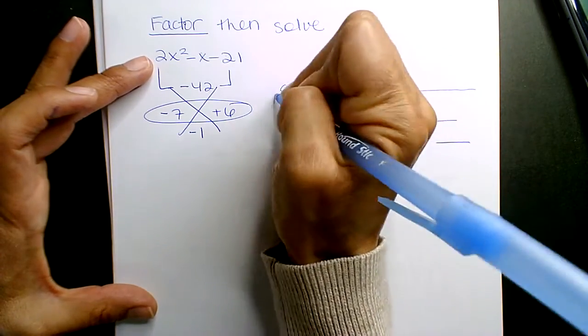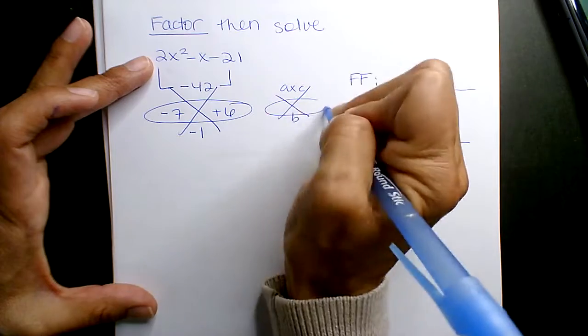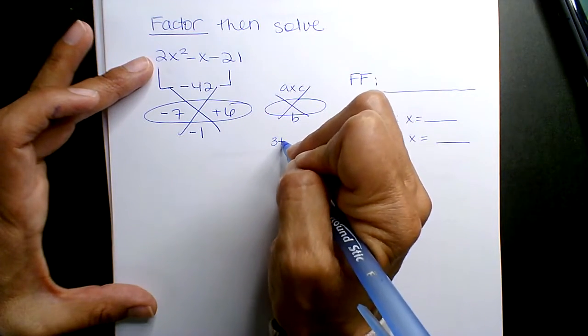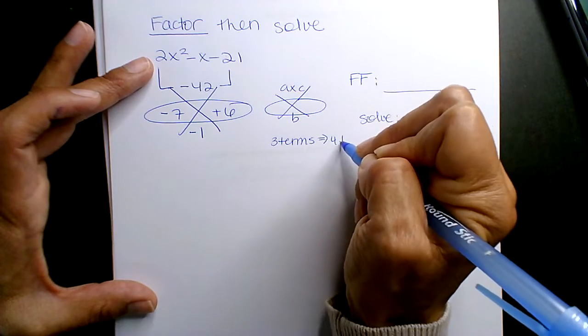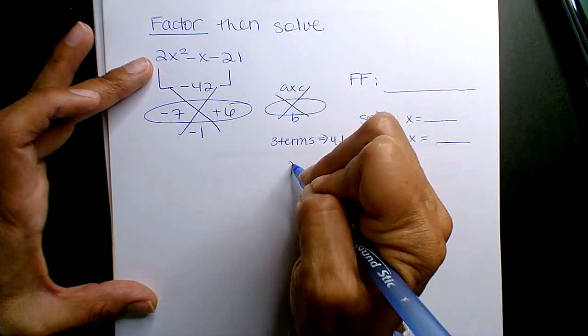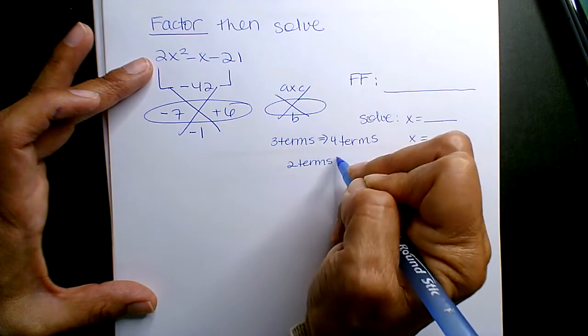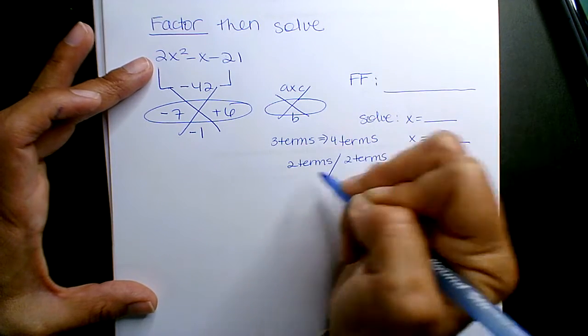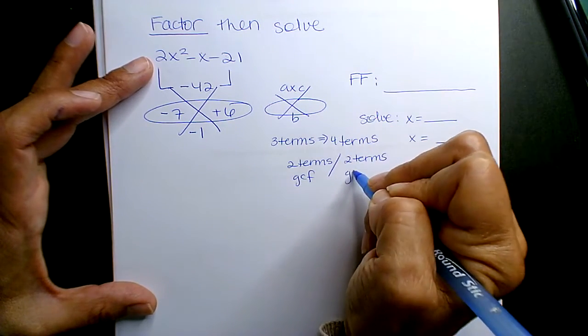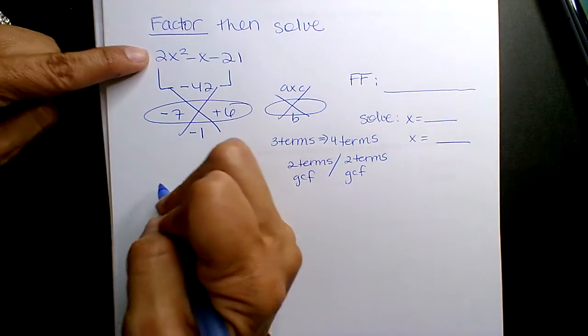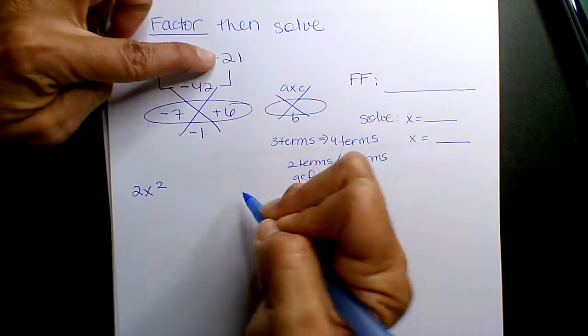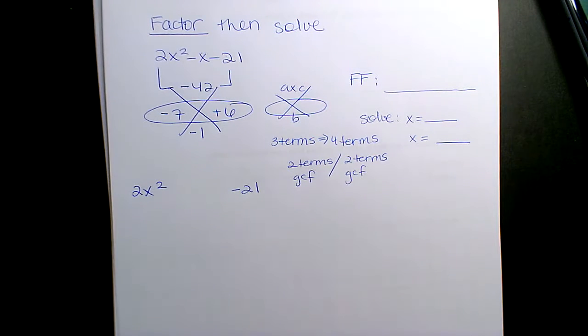So you go your A times C, your B value, once you find these two numbers, you're going to make your three term trinomial become four terms. And with those four terms, when you write it, you're going to split it in GCF. Okay, alright, so what does that mean? First term and last term, leave it alone, bring it down.